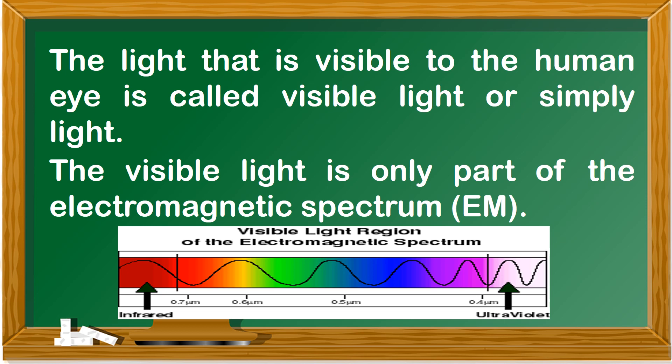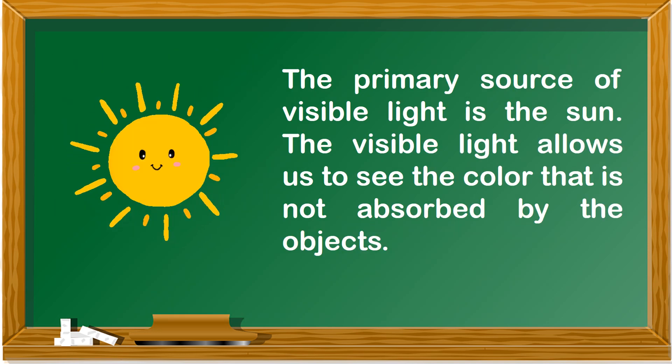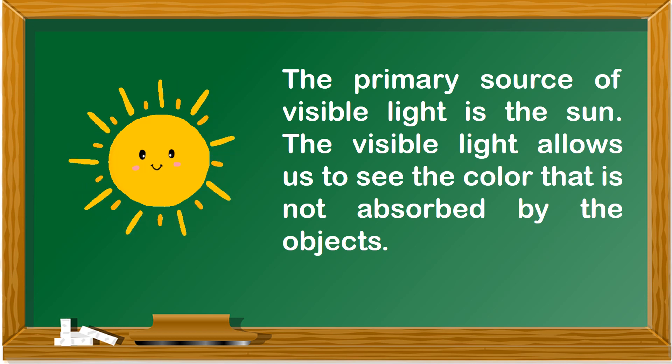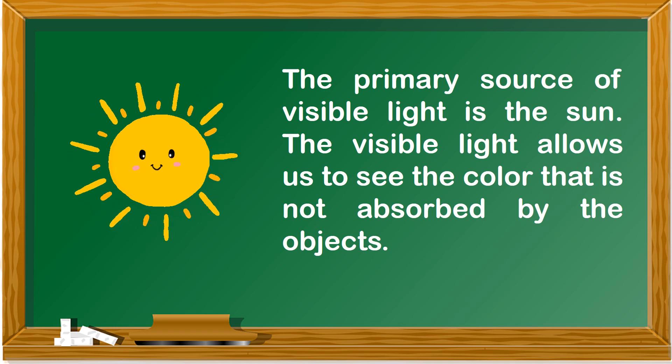The light that is visible to the human eye is called visible light, or simply light. The visible light is only part of the electromagnetic spectrum, or EM. The EM shows the entire range of waves present in our world. The primary source of visible light is the sun. The visible light allows us to see the color that is not absorbed by objects.